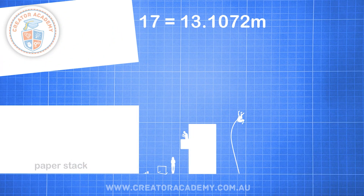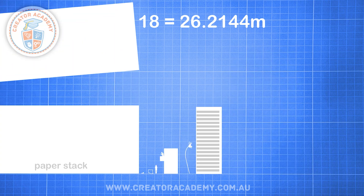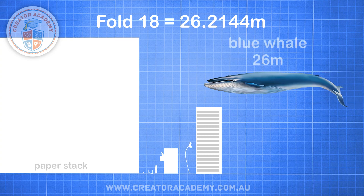It's time to buckle up, because this exponential growth rocket is about to take off. Nobody ever thought this would happen, but you fold your piece of paper 17 times, which brings your stack to 13 metres high, or the length of a shipping container. At 18 folds your stack of paper is now 26 metres high, and it consumes most of the trees in your neighbourhood. An adult blue whale is not impressed with you wasting so much paper, but is surprised that the height of your paper stack is about the same as her length.